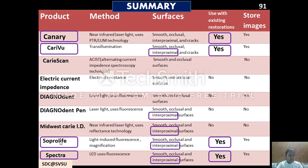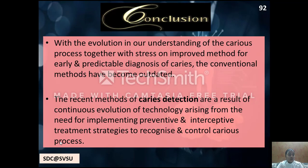To summarize the latest diagnostic aids, according to Susan Vogel, most of these systems are applicable for both smooth and occlusal caries. In the presence of an existing restoration, systems that can be used include Canary, Cariview, Sporolife and Spectra. With the evolution in our understanding of the caries process and stress on improved methods for early and predictable diagnosis, conventional methods have become outdated. The recent methods of caries detection are a result of continuous evolution of technology arising from the need for implementing preventive and interceptive treatment strategies to recognize and control the caries process. These recent methods, coupled with changing philosophies in caries diagnosis and detection, are more accurate and more directed towards treatment needs.